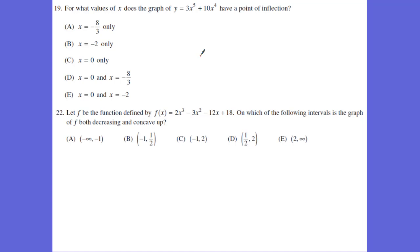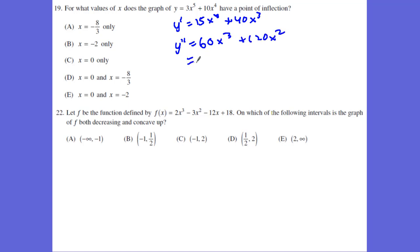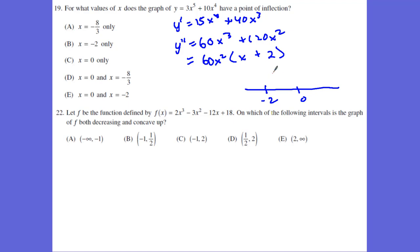Here we're taking a look at points of inflection. We take the second derivative: the first derivative is 15x to the fourth plus 40x to the third, and the second derivative is 60x to the third plus 120x squared. Factoring out 60x squared leaves (x plus 2), giving critical numbers at negative 2 and 0 as possible points of inflection. Below negative 2 it's concave down; between negative 2 and 0 it's concave up; from 0 and above it's concave up. So we only change concavity — point of inflection — at negative 2.